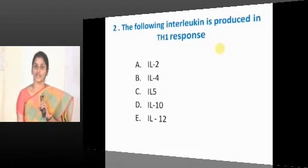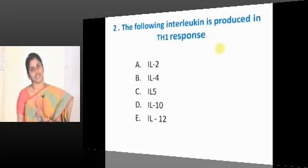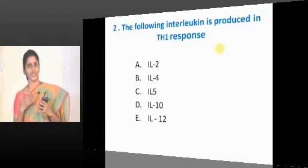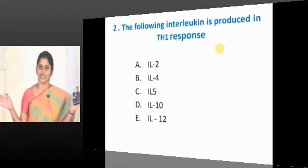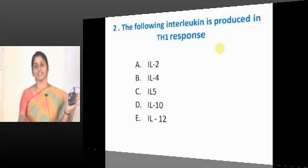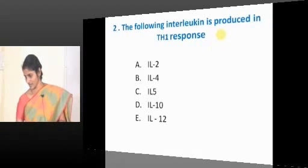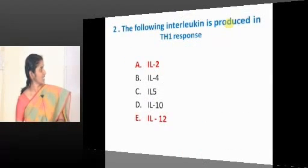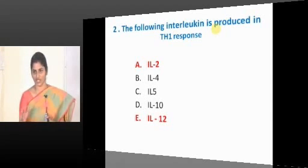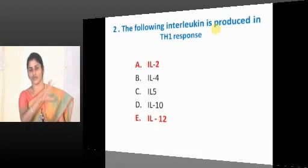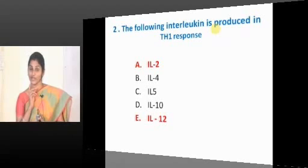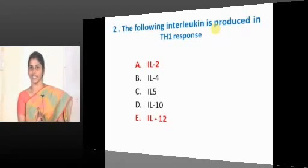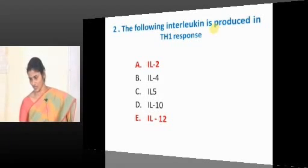Some students will feel we spent 15-20 minutes on one question, but you have learned the answers for 20 questions — it's really worth it. The following interleukin is produced in Th1 response. What are the cytokines of Th1 response? IL-2, IL-12, interferon gamma. The answer is IL-2 and IL-12. Since these are PGI-based questions, questions will have 5 answers with more than one option correct. You need to know the logic and the high-yield areas.